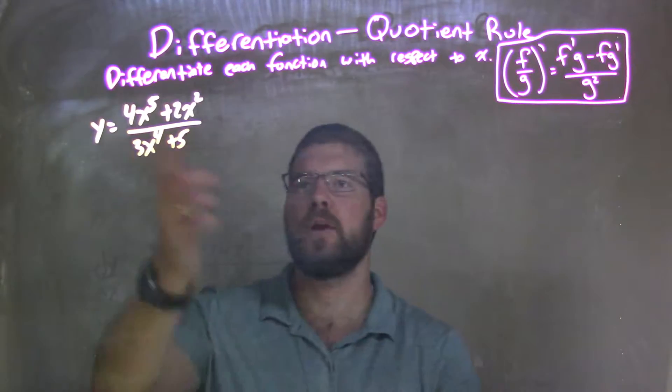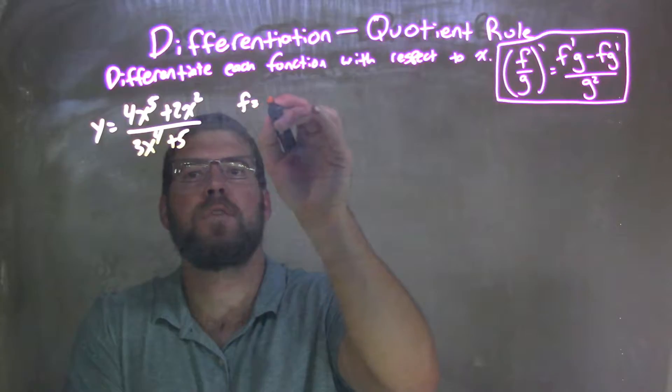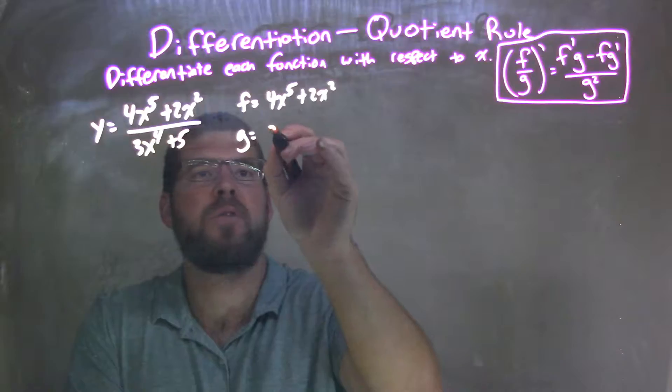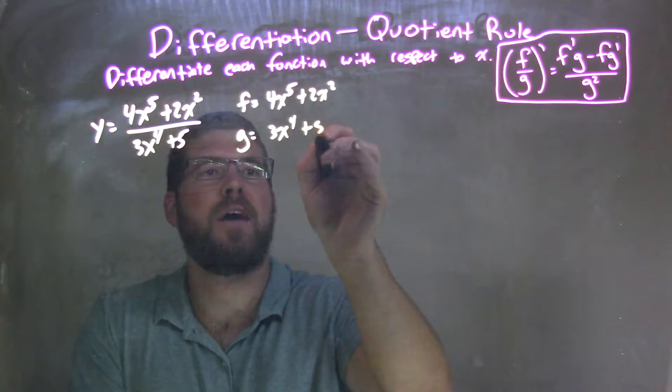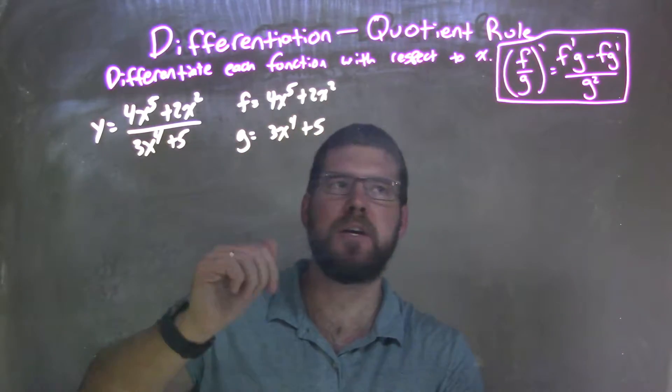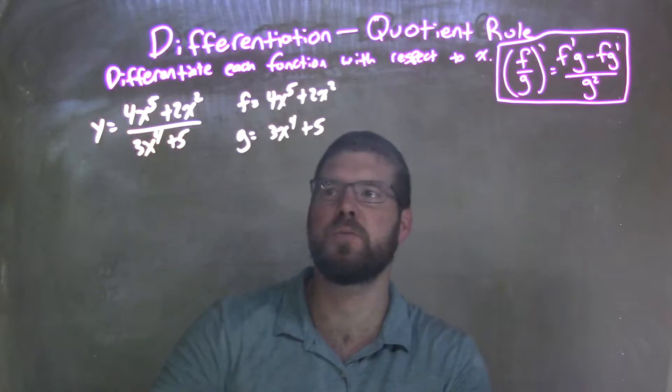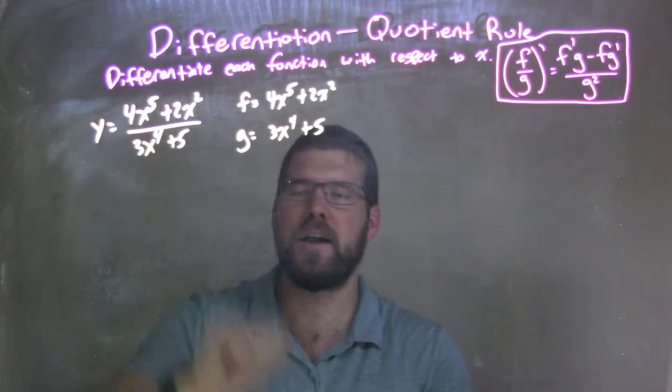Well, I'm going to label my numerator, my f, which is 4x to the fifth plus 2x squared, and my denominator g, 3x to the fourth plus 5. So I now have f over g. I can see that I could apply the quotient rule here. I have two functions being divided as part of one big function.